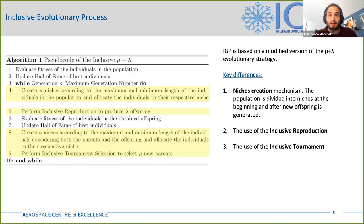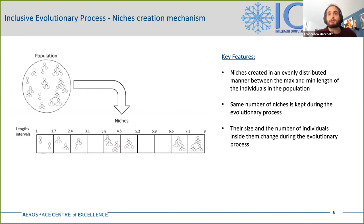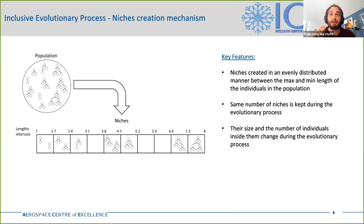First, the population is divided into niches, and these are created before the inclusive reproduction and the inclusive selection are performed — which are the other two main changes. The individuals are distributed according to their length, so the number of nodes inside each individual, which is their genotype. Considering the example in the picture, we have a population of 10 individuals. If we don't consider the root node, we have a minimum length of one and a maximum of eight, and we want to create 10 niches. The first niche will contain individuals with a length from 1 to 1.7, the second those from 1.7 to 2.4, and so on.